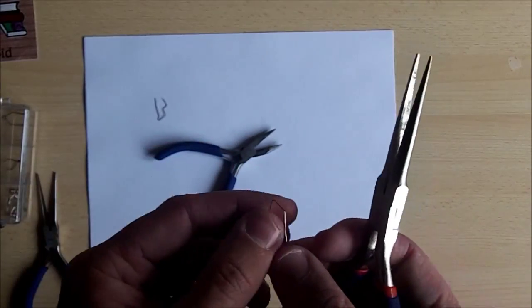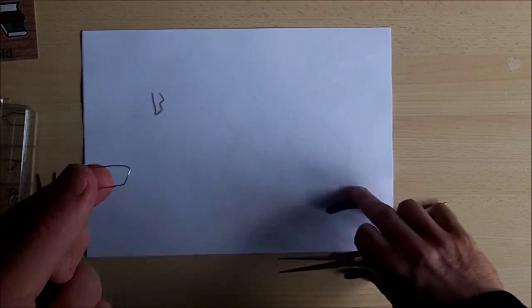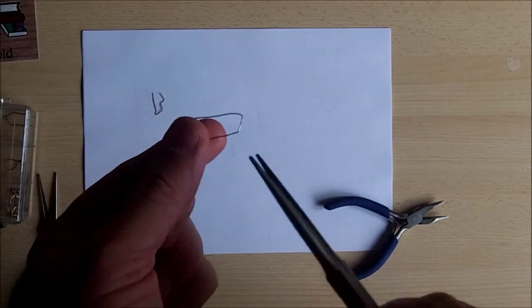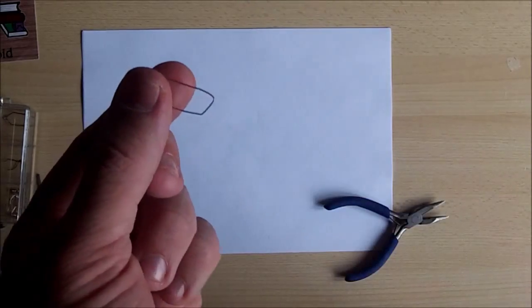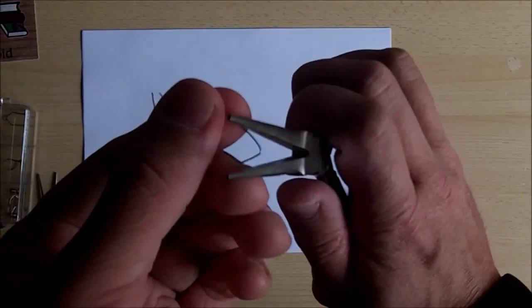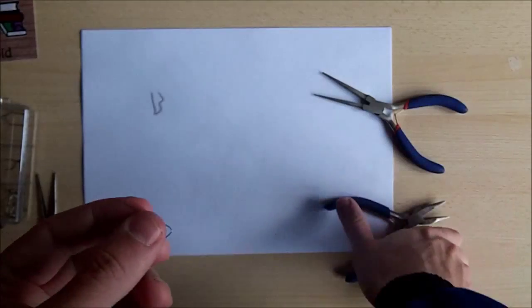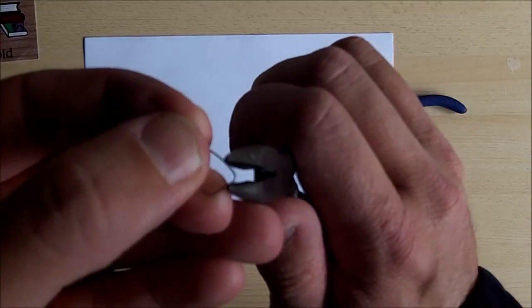Now how do we get our shoe shape? That's quite easy. From here, the one that's lower down, we're going to pinch at a 45 degree angle. This pair of pliers won't do because they don't have any grip. Take this, pinch at a 45 degree angle and give it a little squeeze.